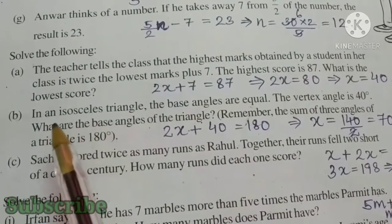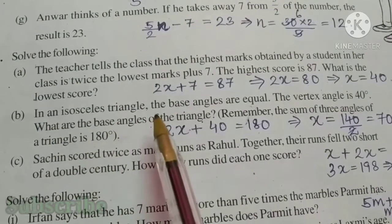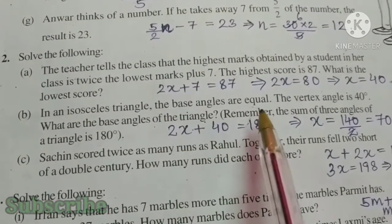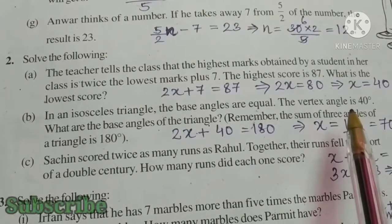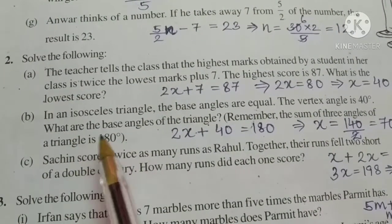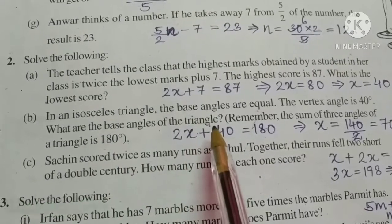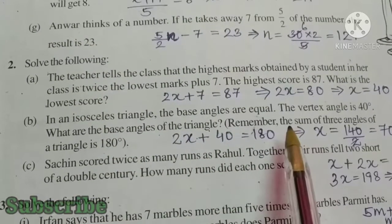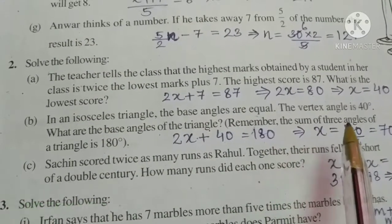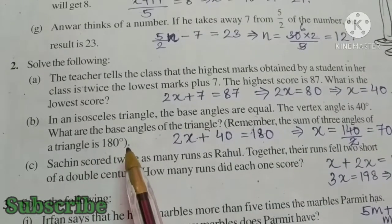B part, in an isosceles triangle, the base angles are equal. The vertex angle is 40 degree. What are the base angles of the triangle? Remember that the sum of 3 angles of triangle is 180.